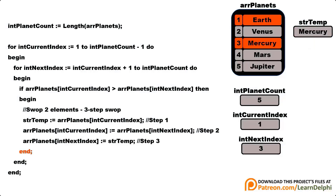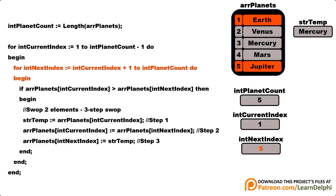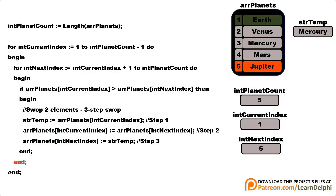The inner loop continues to the end of the array because there may be more names smaller than Earth. It finds Mars next — Earth is not greater than Mars, so no swap. Then it finds Jupiter — Earth is not greater than Jupiter, so no swap. The inner loop has reached the end of the array, and Earth in position 1 is now in its final position. The compiler jumps back to the outer loop, the current index increments, and it finds Venus in index 2.